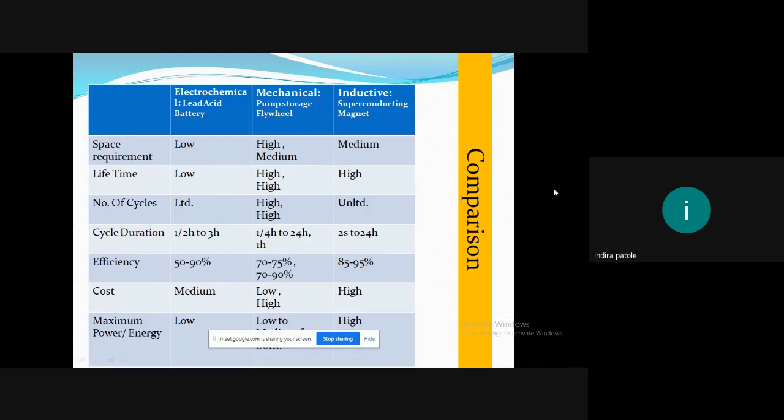Now, if you go for mechanical storage type, pump storage and flywheel storage, the space requirement by pump storage is high, by flywheel it is medium. Lifetime for pump storage is high, for flywheel it is also high. The number of cycles for pump storage is high, flywheel is high. Cycle duration is one or four hours to 24 hours. For flywheel it is one hour. Efficiency is 70 to 75%. And for flywheel it is 70 to 90%. Cost for pump storage is low, for flywheel it is obviously very high. Maximum power or energy produced by this kind of storage is from low to medium for both.